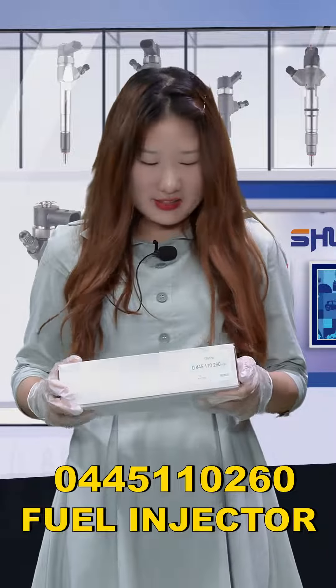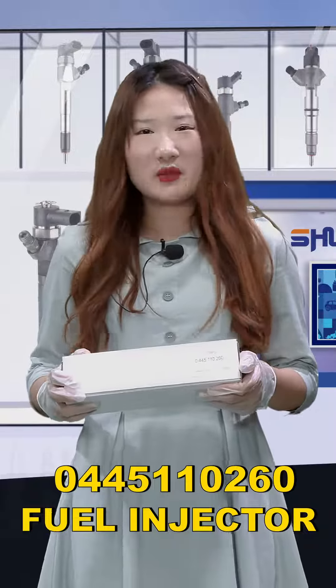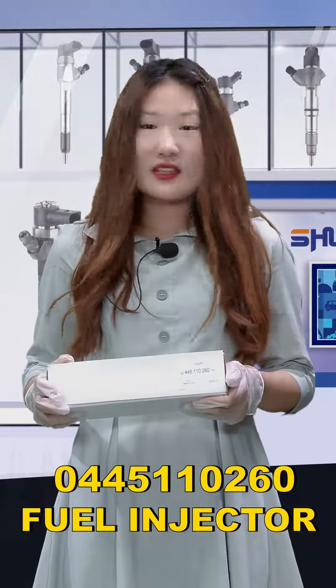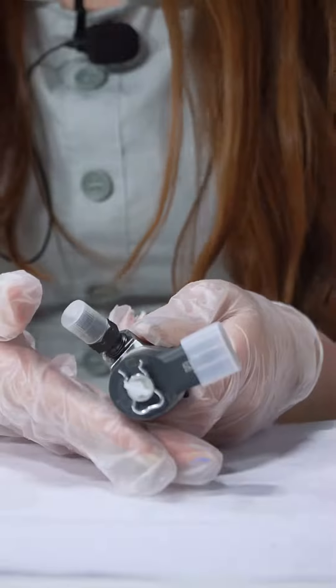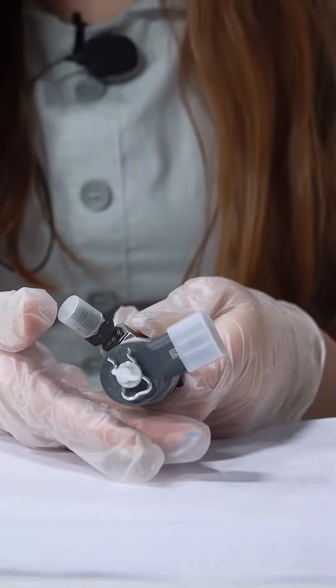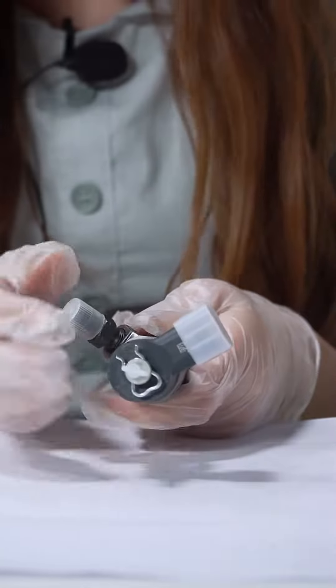Okay, now let's see it together. Firstly, it's the outside package, a white module box, and the product code is 0445110260. We support customized service. The solenoid valve and other spare parts already use protection covers to protect them.